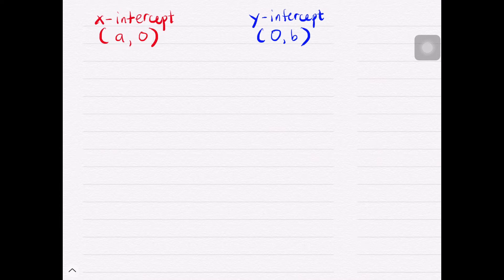Similarly, y-intercept will have the form (0, b), that means x-coordinate here is 0 and we have a value for y-coordinate. And yes, this is a point that cuts, passes, or intercepts the y-axis.